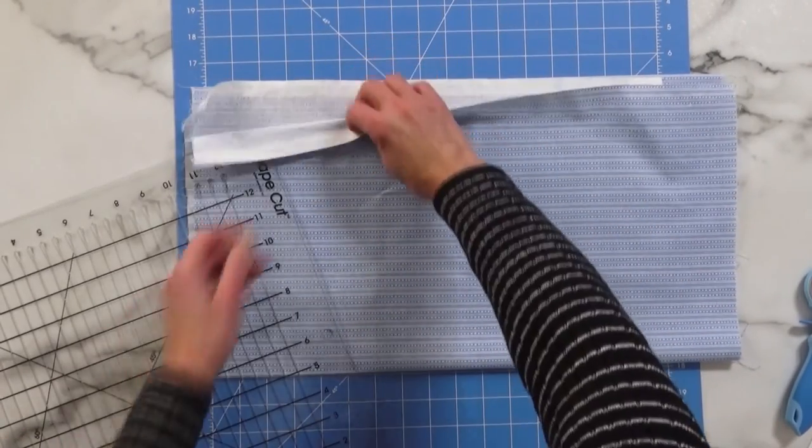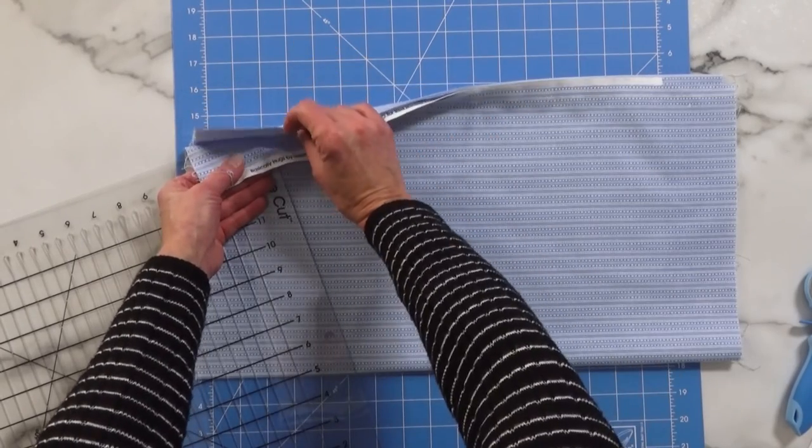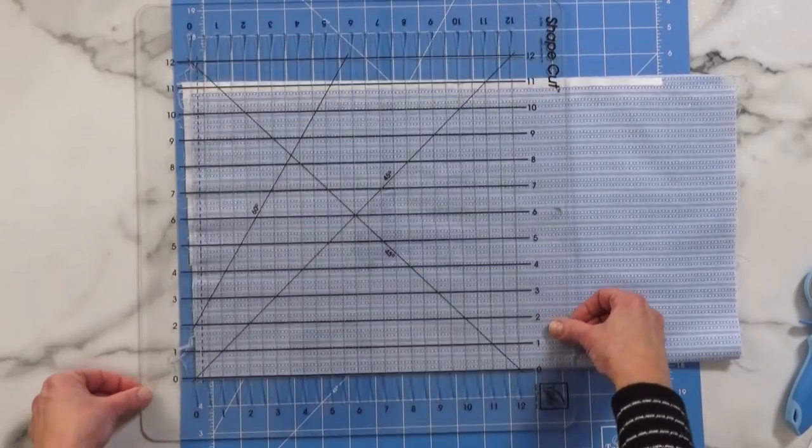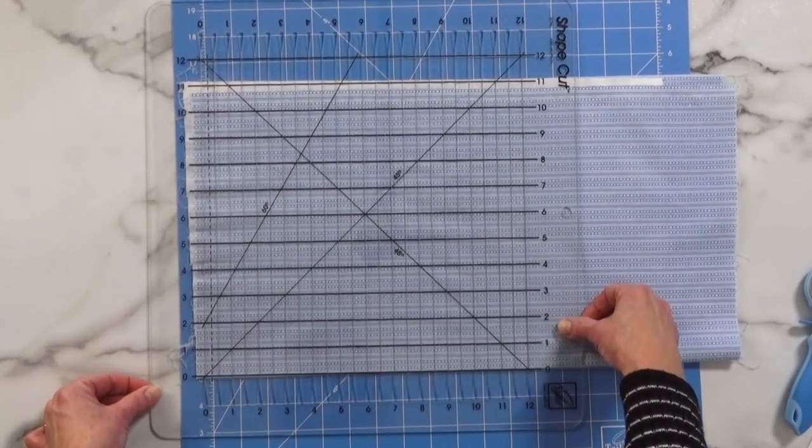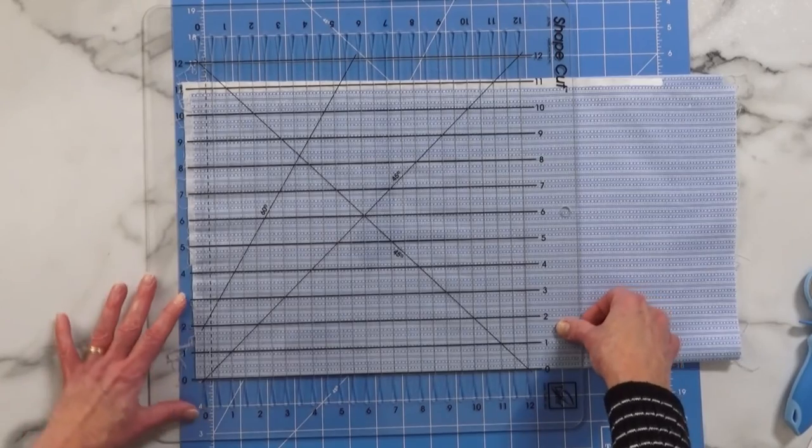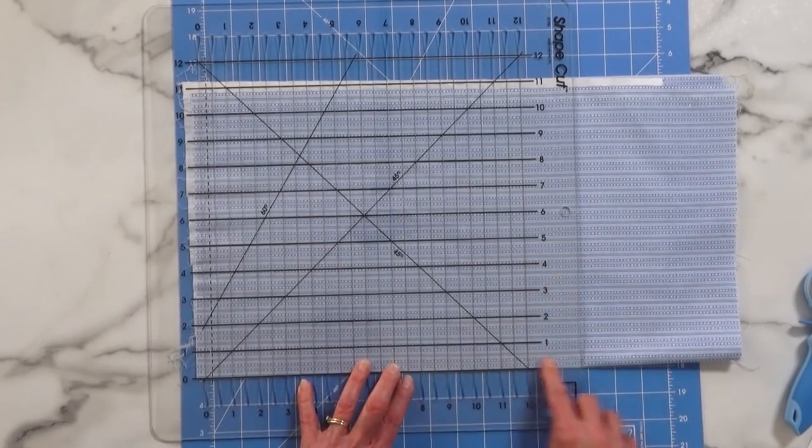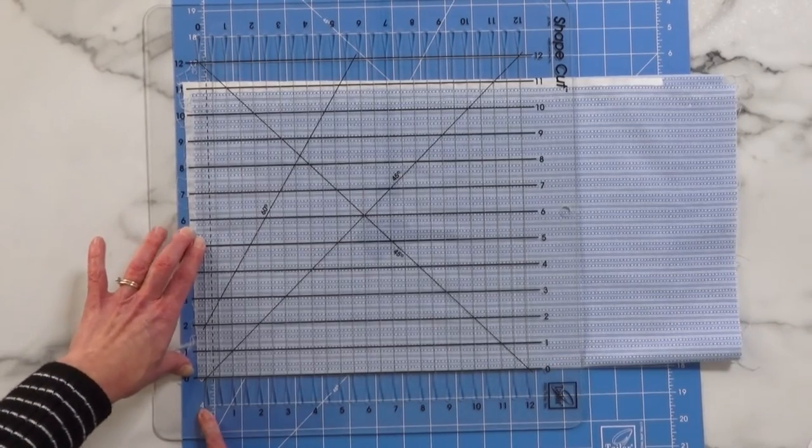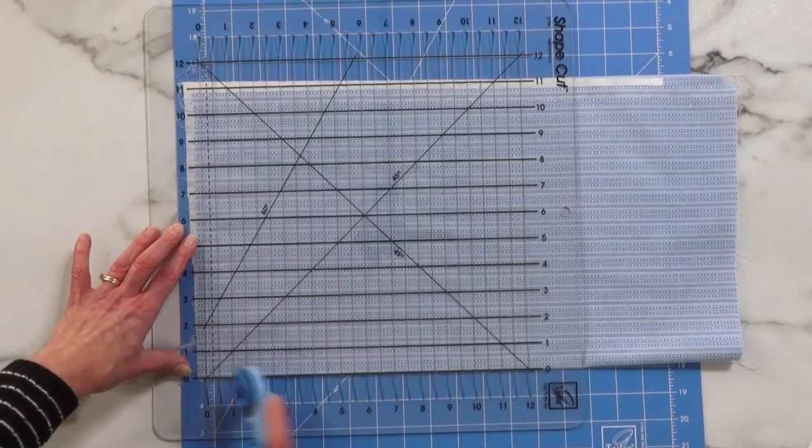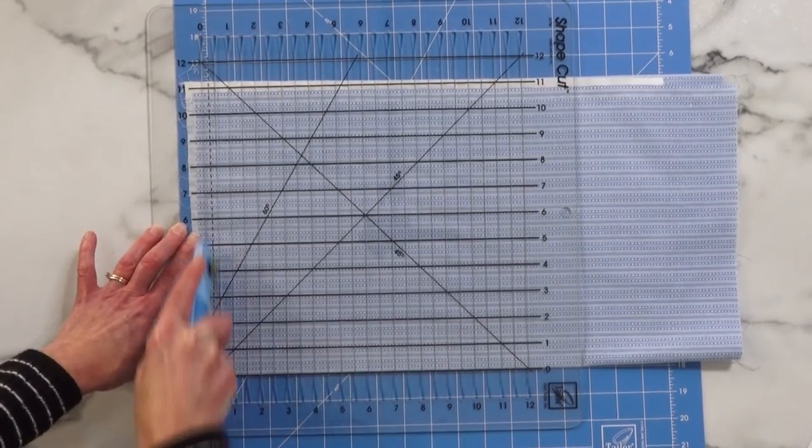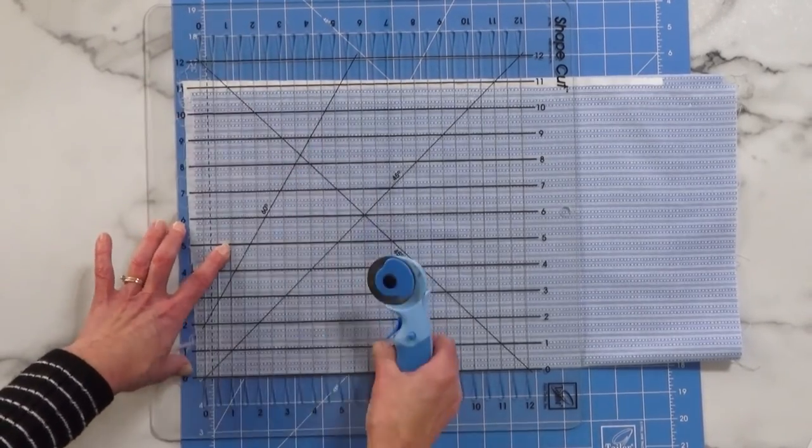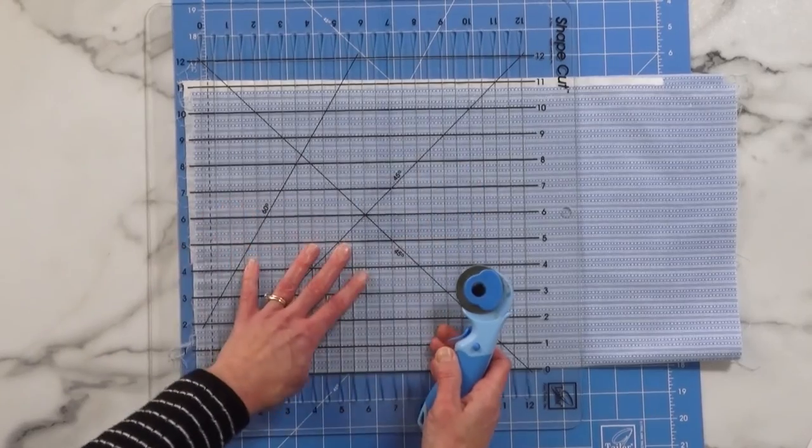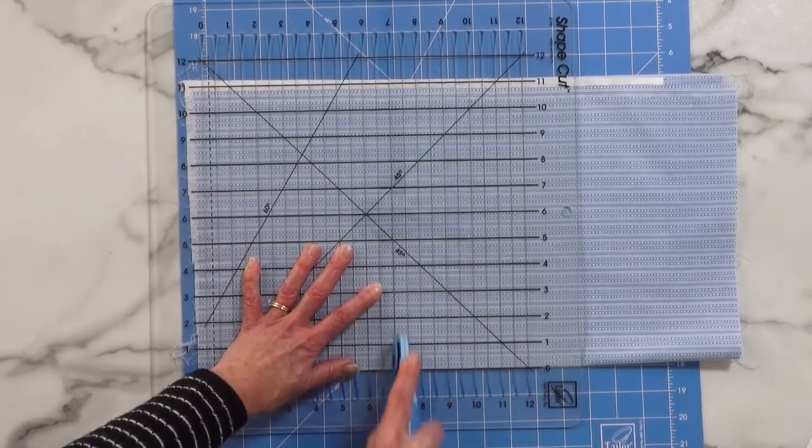We start with our fabric, salvage edges and folded edge, so full width of fabric, and we're going to place the shape cut with the zero line on the bottom edge of our folded fabric so that it's all nice and lined up right here. We'll start by cutting in the zero slot to make sure that our edges are nice and square. So we'll start by cutting in zero. We need three and a half inch strips, so we'll cut in the three and a half inch slot and again in the seven inch slot.